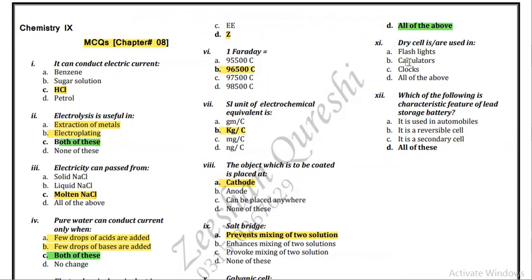Dry cell - dry cell is used in flashlights, wall clocks, or wristwatches. All of the above statements are true.